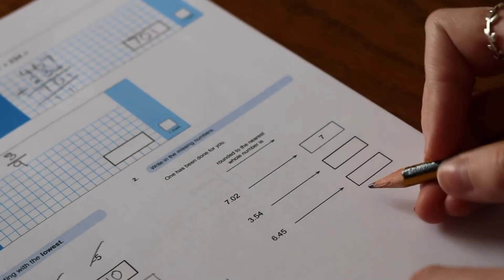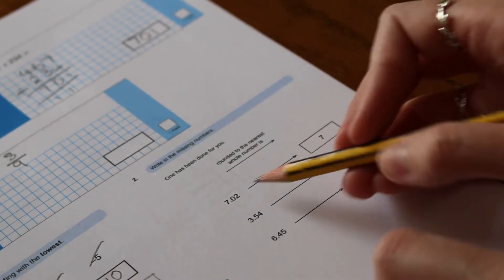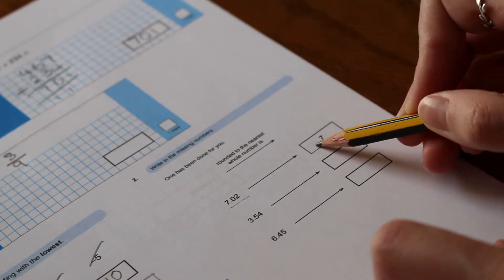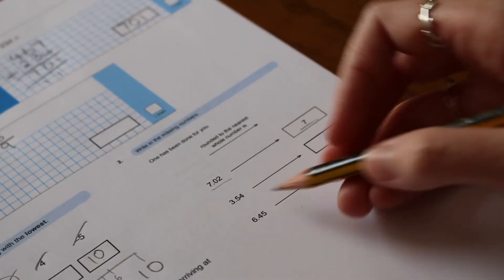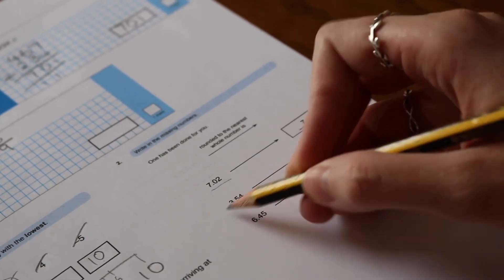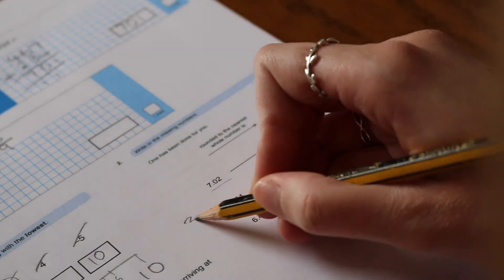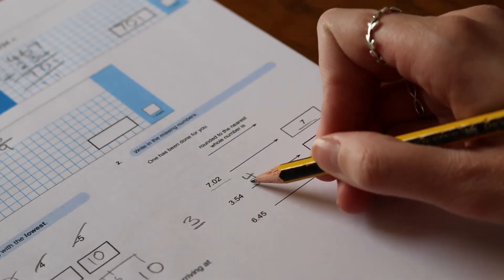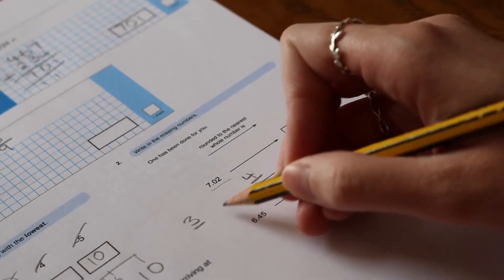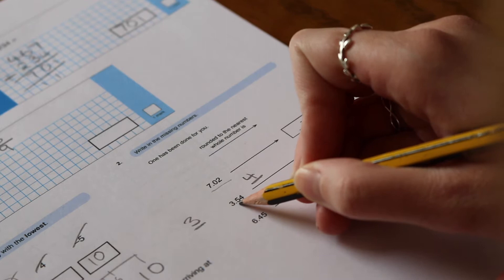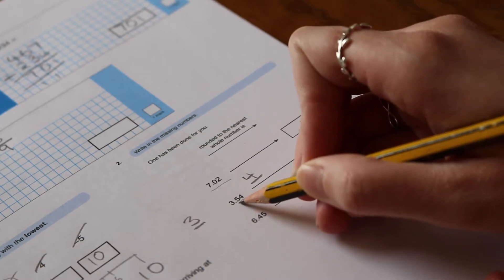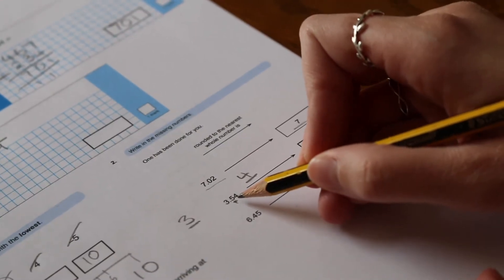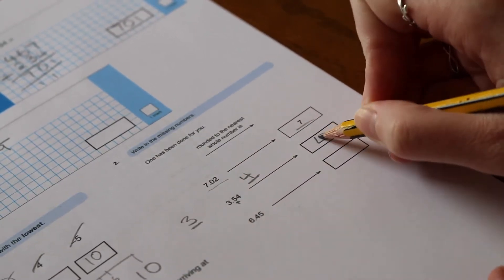The next one, rounding these numbers to the nearest whole number. So the first one has been done for you: 7.02 to the nearest whole number is 7. Now 3.54, well we know that this number sits between 3 and 4. So if we're rounding down we're going to 3, if we're rounding up we're going to 4. We need to look at the number 1 place to the right of the decimal point, which is our tenths column, and that is a 5. And the rule we know with rounding is that if it's 5 or above we round up, so we will round up to 4.